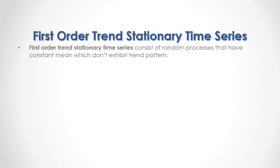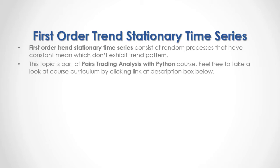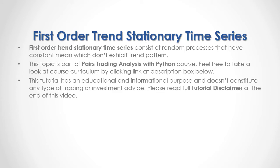First-order trend stationary time series consists of random processes that have a constant mean and don't exhibit a trend pattern. This topic is part of a pairs trading analysis with Python course. This tutorial has an educational and informational purpose and doesn't constitute any type of trading or investment advice. Please read the full tutorial disclaimer at the end of this video.